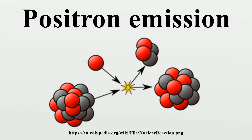The positron is a type of beta particle, the other beta particle being the electron emitted from the beta-minus decay of a nucleus.